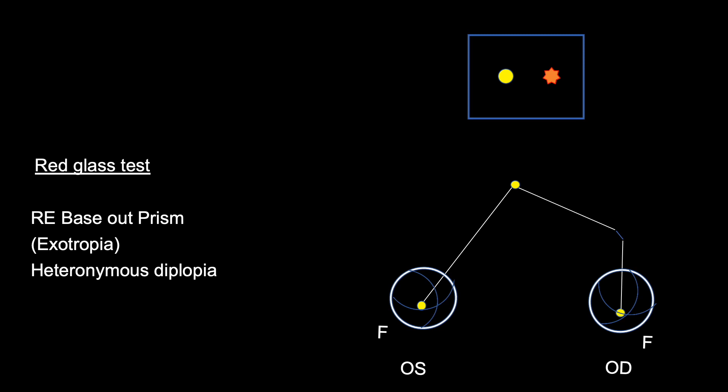Similarly, base out prism is placed in front of the right eye making the eye exotropic. We can see the crossed image of white light in front of the left eye, red light in front of the right eye. That is called heteronymous diplopia.